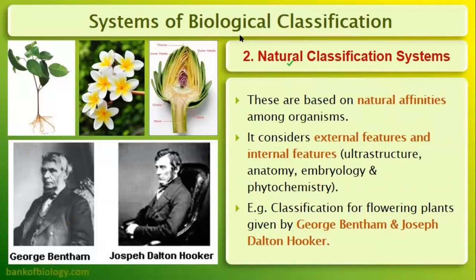The natural system of classification was given by George Bentham and Joseph Hooker. It is based on natural affinities among organisms, and it took both external and internal features — morphology, anatomy, phytochemistry, embryology, and ultrastructure. Ultrastructure refers to microscopic structure, anatomy includes tissue study, embryology covers how an organism forms its embryo, and phytochemistry deals with chemical reactions in molecules — all given equal weightage.